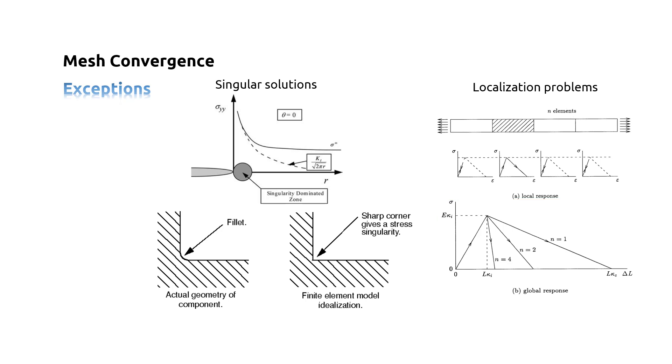Upon mesh refinement, convergence to a meaningful solution does not occur. In fact, the global post-peak curve doubles back on the initial elastic path for an infinite number of elements, representing the case of a line crack of width zero and zero energy dissipation. The solution is unacceptable from a physical point of view.